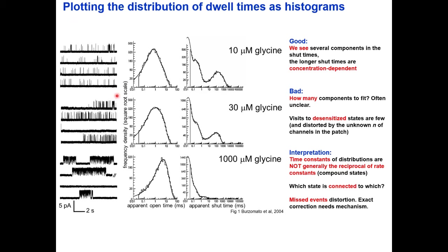This slide shows the data for glycine receptor cell-attached recording at 10, 30, and 1000 micromolar glycine, plotted as open time distributions and shut time distributions on a log scale that allows us to see the time constant as the peak of the probability density function. Good things about single channel recording: we can already see in the shut times that there are several components — more than two — which beats macroscopic. We can see that the longest shut times are concentration dependent.